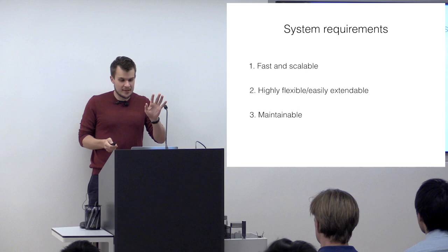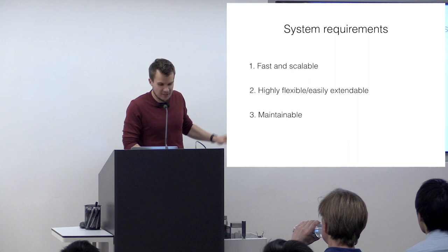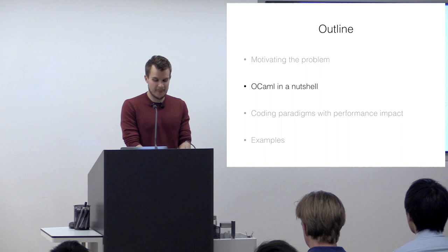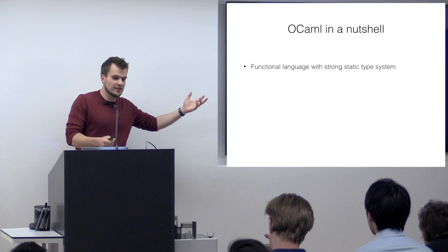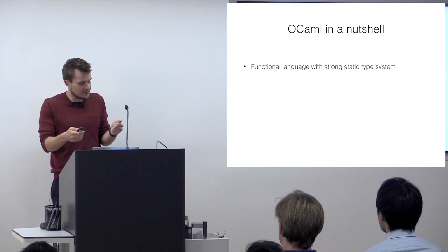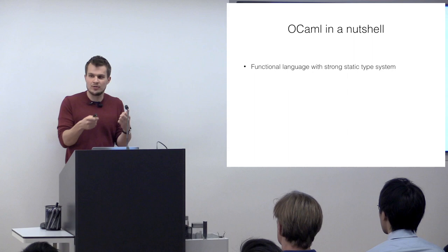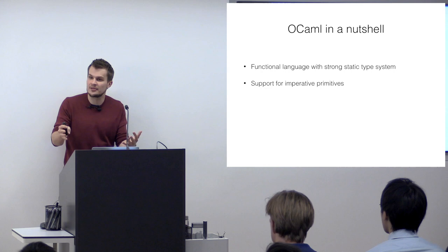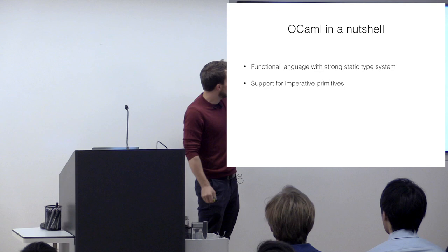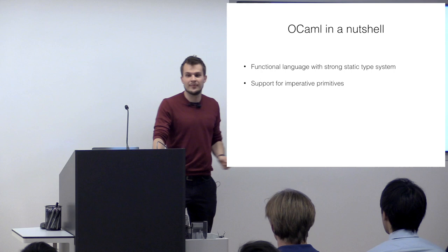Now that we understand the system requirements, let me talk about OCaml and what it means in this world. OCaml is a functional language with a strong static type system, which means the usual functional programming things: higher-order functions, immutability, and type inference. We really like these features. OCaml also has some support for imperative primitives — you can do procedural-style coding, have side effects, and have mutability. In fact, I've heard the author of OCaml once called it an imperative language with strong support for functional paradigms, so it sits a bit between the two.